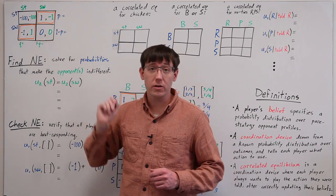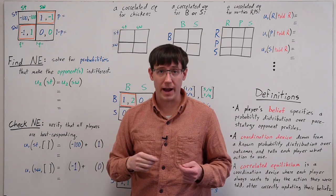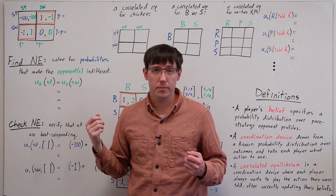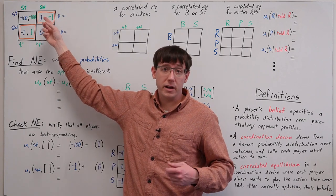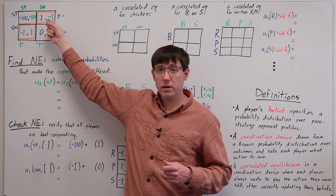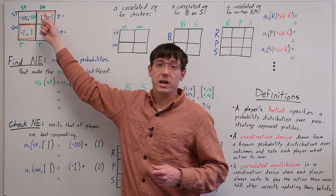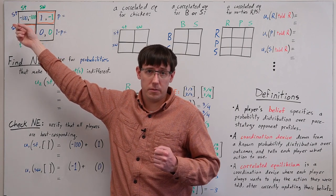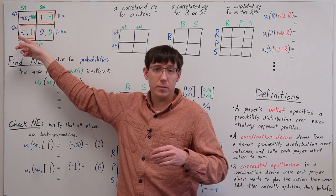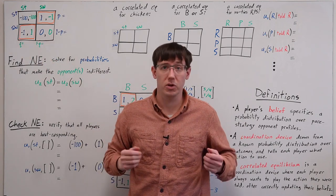In a game of chicken, where two players drive toward each other, and if both continue straight they'll crash, there are two pure strategy Nash equilibria. If player 1 plays straight and player 2 plays swerve, then player 1 doesn't want to switch and get 0, and player 2 definitely doesn't want to switch and get minus 100. And the opposite outcome, where player 2 goes straight and player 1 swerves, is also a Nash equilibrium by similar reasoning.